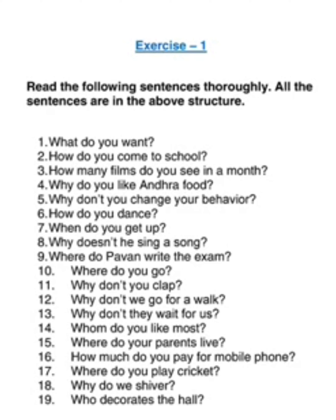How do you dance? You get 'you' again - in conversations you talk to a person, so you often get 'you'. When do you get up? For the eighth one, the subject is 'he', so you use 'doesn't': Why doesn't he sing a song? Ninth: Where does Pooja write the exam? - 'Pooja' is singular so we use 'does'. Tenth: Where do you go? Eleventh: Why don't you clap? Twelfth: Why don't we go for a walk? Thirteenth: Why don't they wait for us? With you, we, and they, you get 'don't'; place the WH before it.